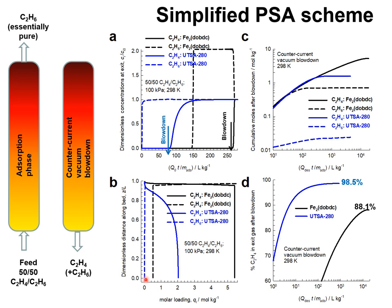The adsorption cycle is terminated before the unsaturated alkene starts to emerge from the exit. With UTSA-280, practically no C2H6 remains within the pores after the end of the adsorption cycle. However, with iron MOF-74, a finite loading amounting to about 0.5 moles per kilogram of the saturated alkane remains within the pores at the end of the adsorption cycle.